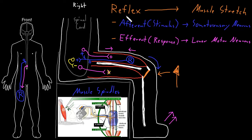A lot of reflexes in the nervous system share similarities with this sort of setup, where you can almost think of a balance between responses that the nervous system can choose from, and the reflex tips the balance in favor of a response in one direction.